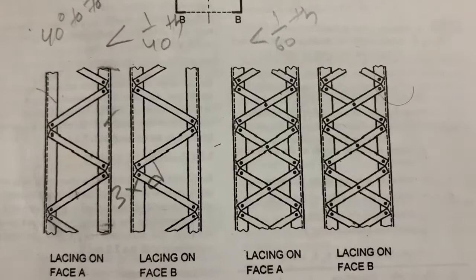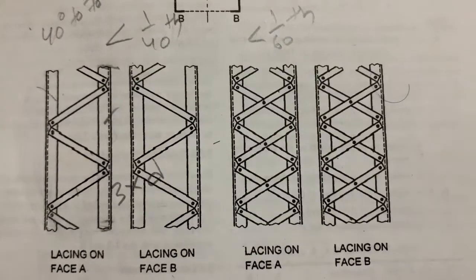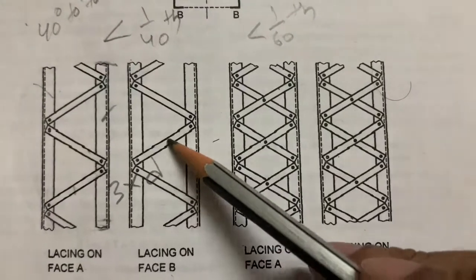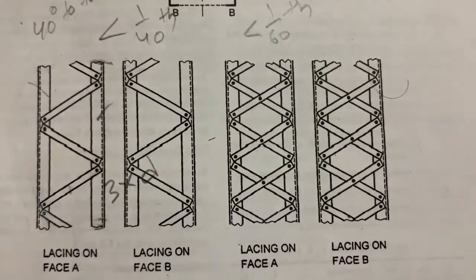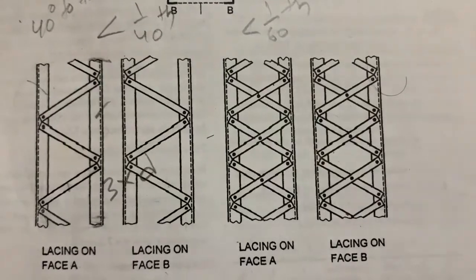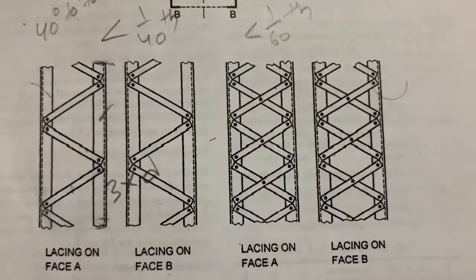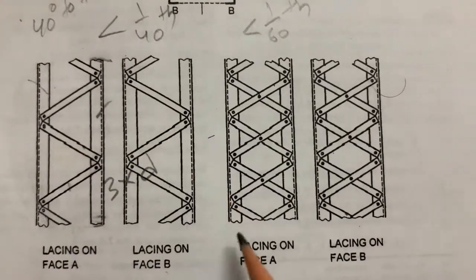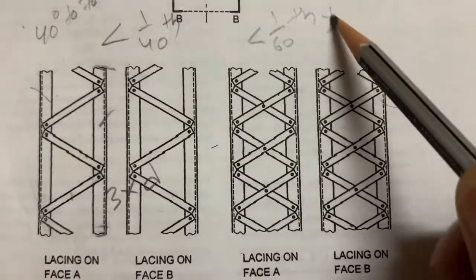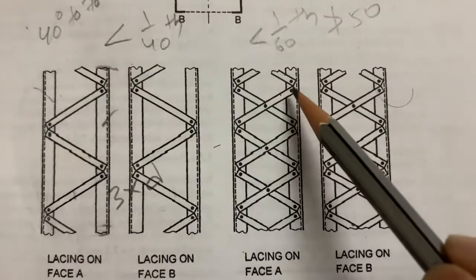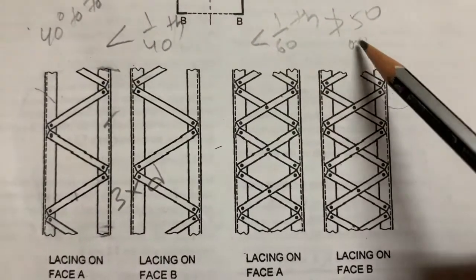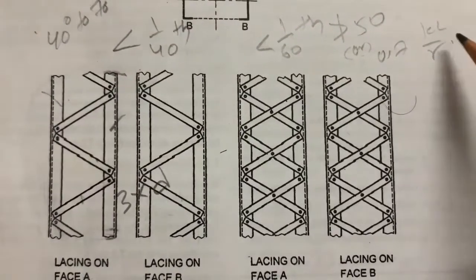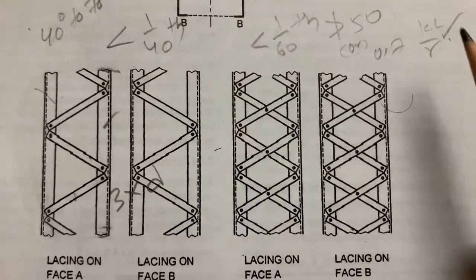The maximum spacing of lacing bars — whether connected by bolting, riveting, or welding — should not be greater than 50, or 0.7 times kL/r, where kL/r is the slenderness ratio. We need to remember this condition for maximum spacing of lacing bars.